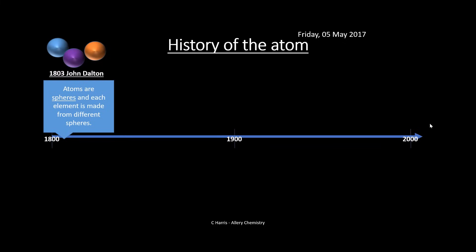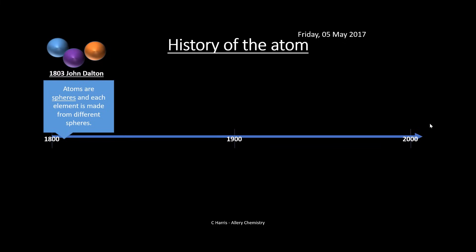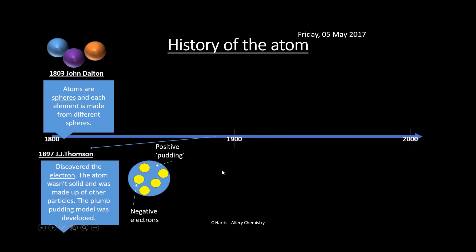Back in 1803, John Dalton came up with the idea that atoms were all spheres — a very simple idea. Nearly a hundred years later, J.J. Thomson had a go at changing that model. He discovered the electron and said the atom wasn't solid — it was made up of other particles. He named it the plum pudding model: a positive pudding with negative electrons, shown as yellow circles, embedded inside.